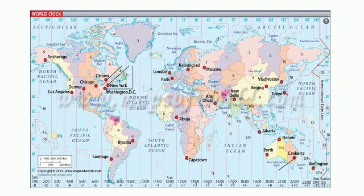Time zones. In certain countries where the longitudinal extent is very large — more than 45° of longitude — there is often a difference of 3 to 4 hours between one part and another. The whole globe is divided into 24 time zones so that the time in each zone differs from the other by only one hour. Large countries like Russia, USA, Canada, and Australia have vast longitudinal extent. Therefore, they have different time zones. Russia has 11 time zones, USA and Canada have 5 time zones, and Australia has 3 time zones.